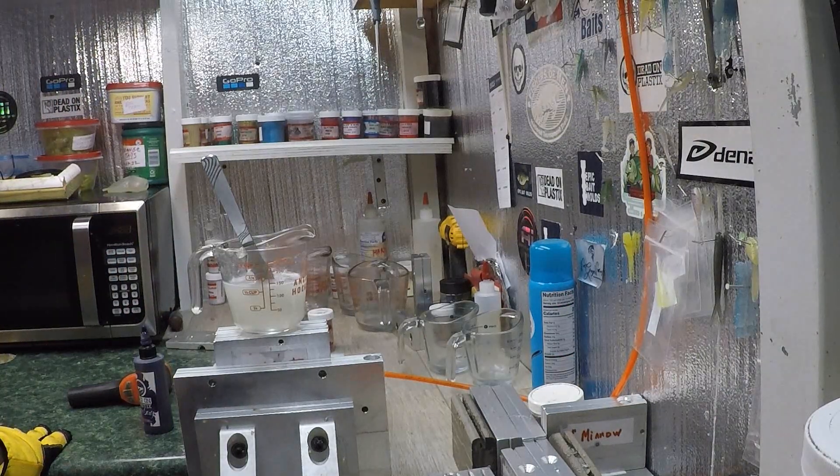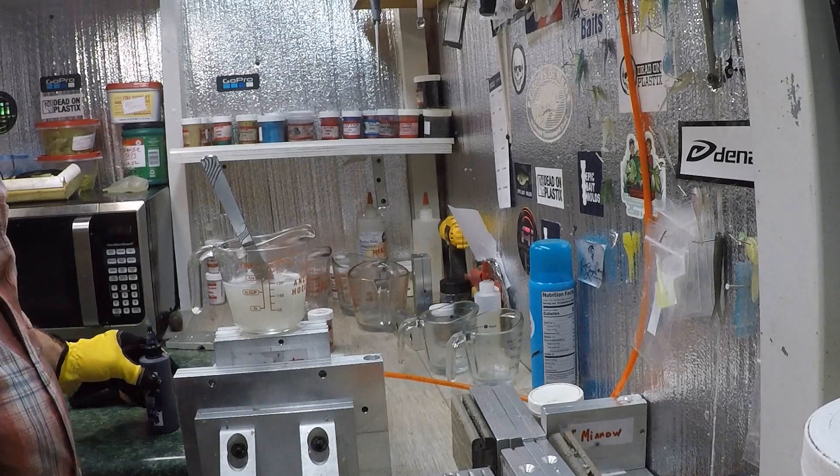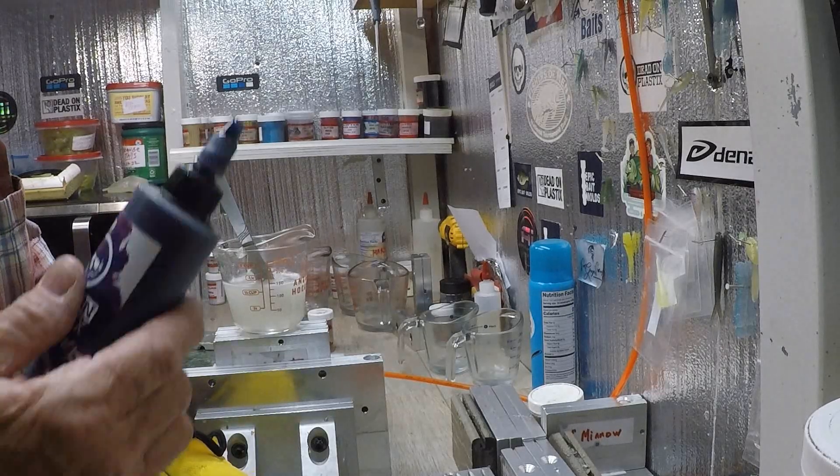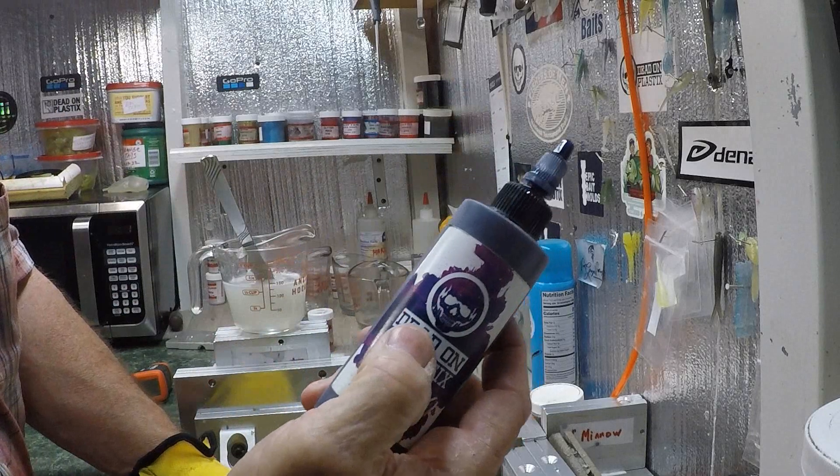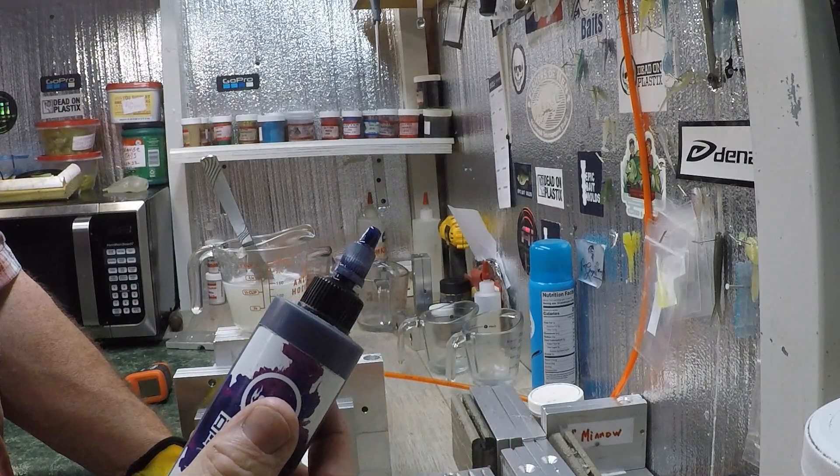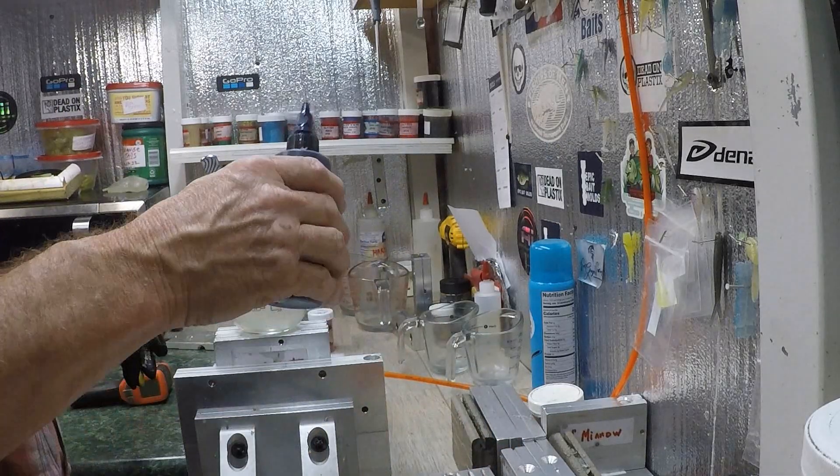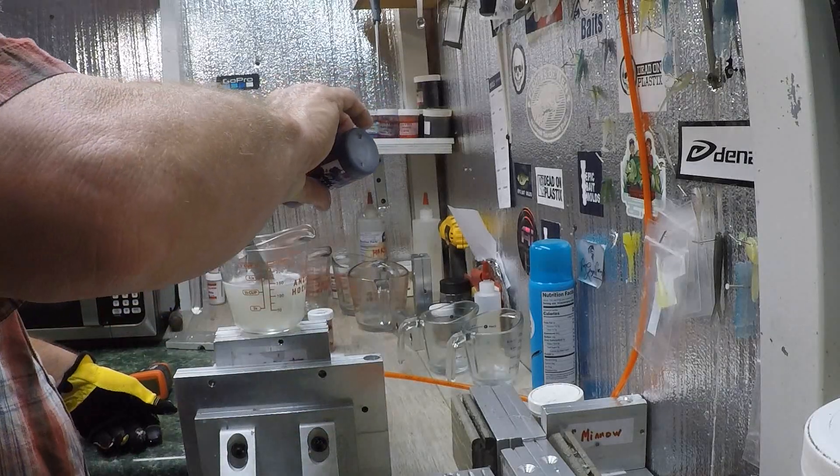I say this all the time when I'm making baits: recipes will vary by what brand of coloring you're using. Some of them are thicker than others, some of them go further. You write down how many drops, that's how we usually do it.